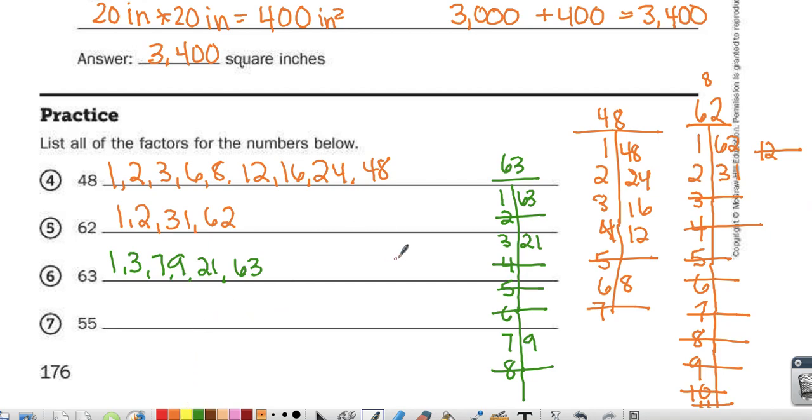And last, 55. 1 times 55. 2 is not a factor because it's odd. 5 times 11. 6 is not a factor because 2 and 3 aren't factors.